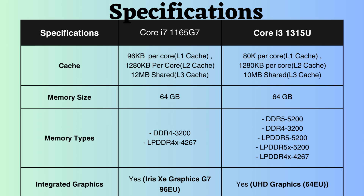Both processors support up to 64 GB of RAM. The Core i3-1315U supports DDR4, DDR5, LPDDR4, and LPDDR5, while the Core i7-1165G7 supports DDR4 and LPDDR4 types of RAM modules. It is evident that the RAM frequencies supported by the i3-1315U are higher than those of the Core i7-1165G7.